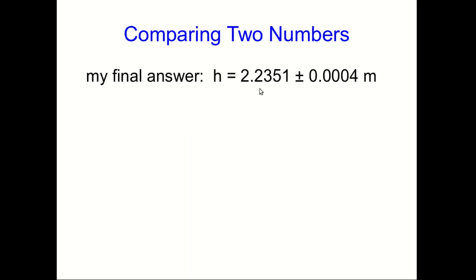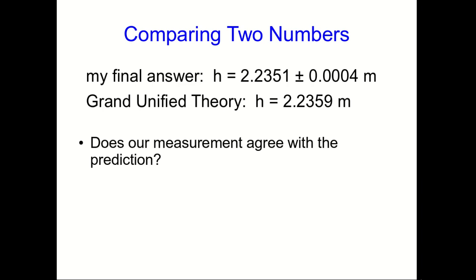Remember that the whole point of this exercise was to be able to compare two numbers. So here's our final measurement, and remember we had this grand unified theory of doors that predicted this height for the door. Do these agree? Well, at first sight it might look like they don't, because that predicted h is outside the range that seems to be indicated by our measurement.